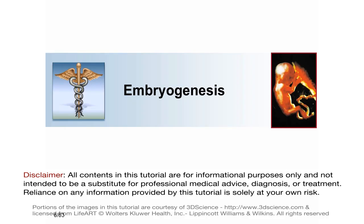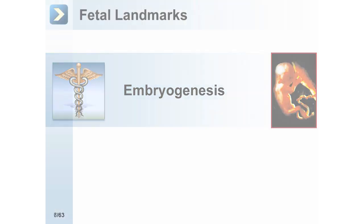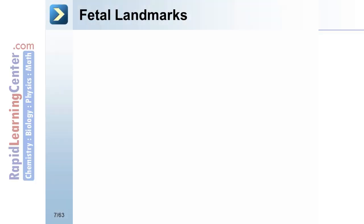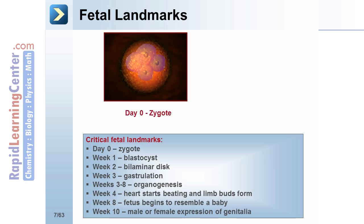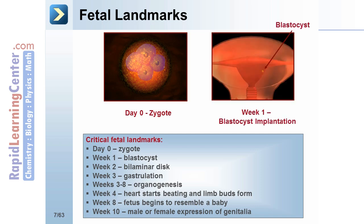Now, let's get started with a review of embryogenesis. There are a number of critical fetal landmarks to be aware of. On day zero, sperm fertilizes egg, forming a zygote and beginning embryogenesis. During week one, the zygote implants as a blastocyst. During week two, the bilaminar disc forms as an epiblast and hypoblast.